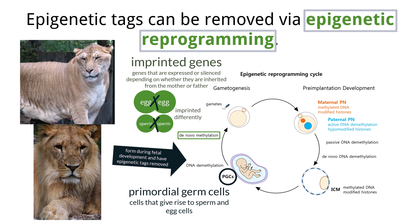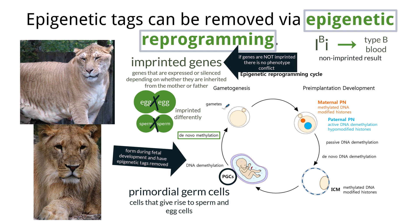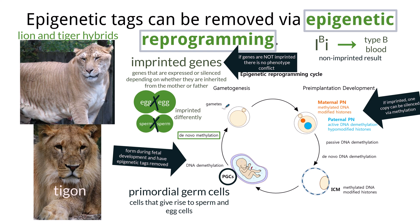When genes are not imprinted, there is no conflict with which phenotype the offspring will have. With respect to imprinted genes, one parent's copy is silenced using methylation, and thus the remaining copy will determine the phenotype of the offspring. An example of this is hybrids of lions and tigers. A female lion and a male tiger produce a tigon, while a female tiger and a male lion produce a liger. The difference is apparent, as ligers can grow to enormous size — over 3 meters long and 500 kilograms in weight. These differences are due to genetic imprinting, and this imprinting is different in tigers and lions.